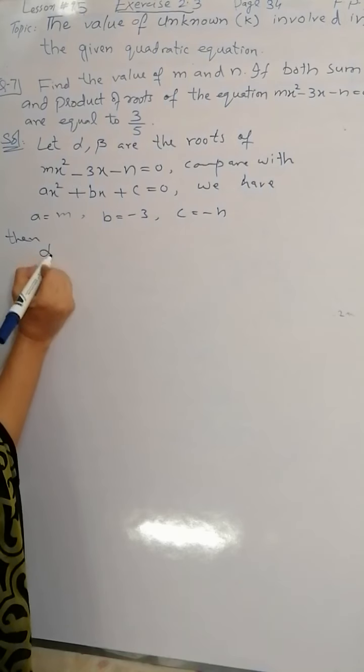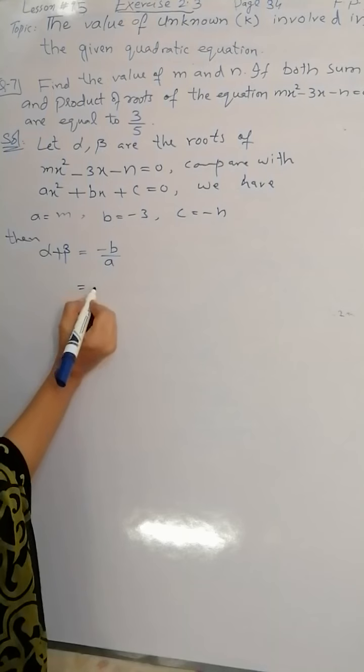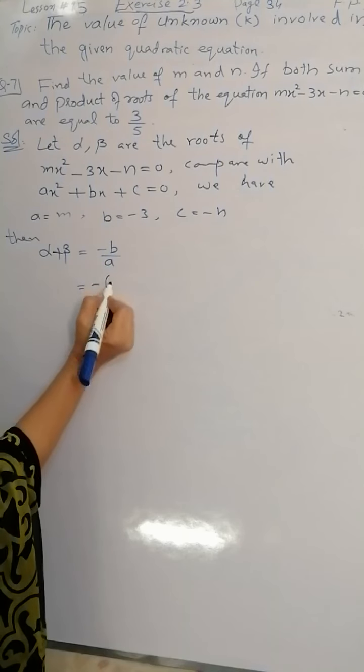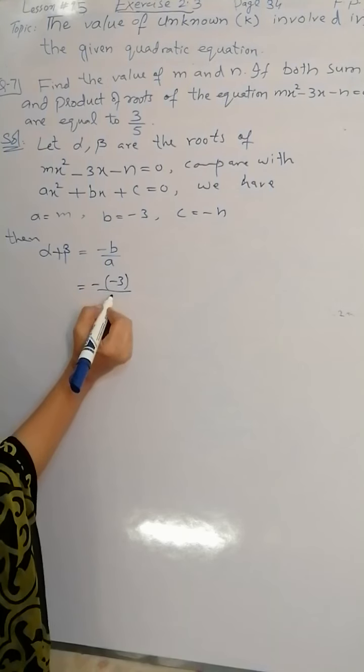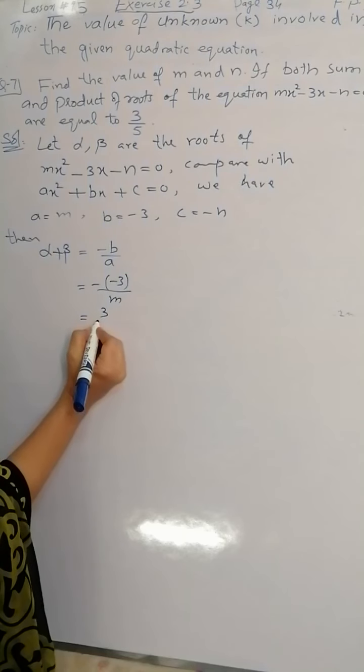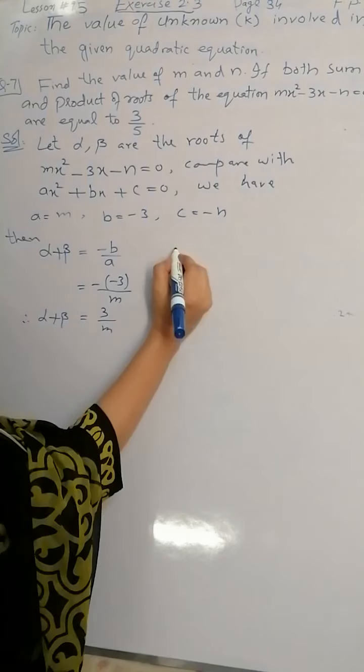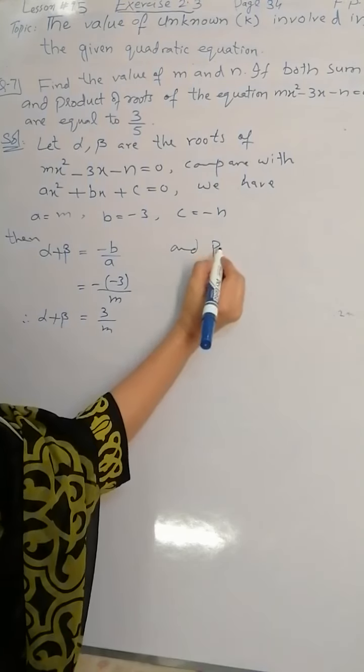Then the sum of roots, alpha plus beta, which is equal to -b/a. Here the value of b is -3, the value of a is m. Minus into minus is plus, so 3/m. Therefore sum of roots is equal to 3/m and product of roots...